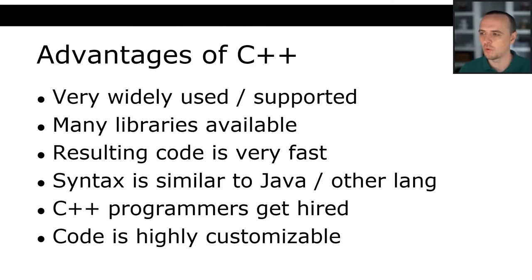So to summarize: source code and header files go through the preprocessor, which creates an expanded source file, which is then compiled. The compiler creates object files, and the linker links all the object files together. Boom. I know that sounds super complex, but it's basically going to be done for you — you can do all of this in a single command. You type G++ myprogram.cpp and that whole process is done. However, this is the actual process because a linker error is going to have to be fixed differently than a compiler error.